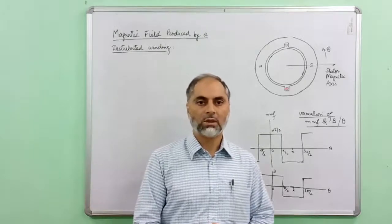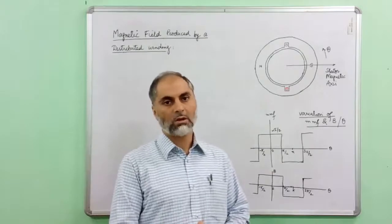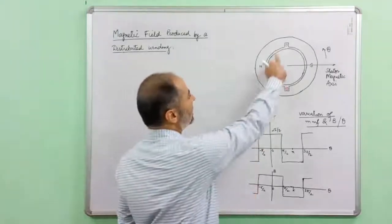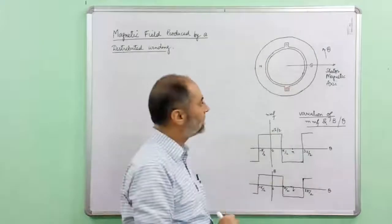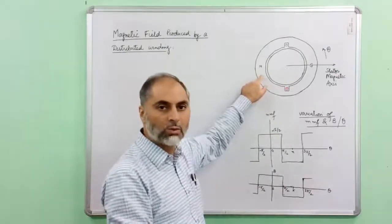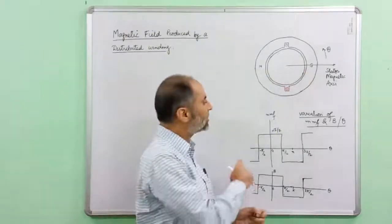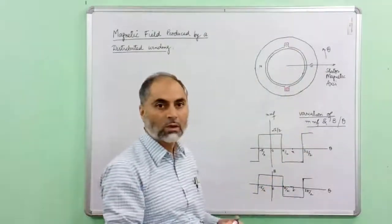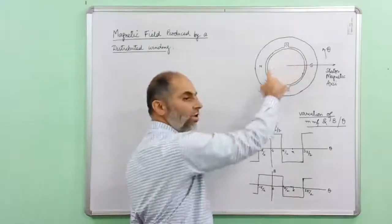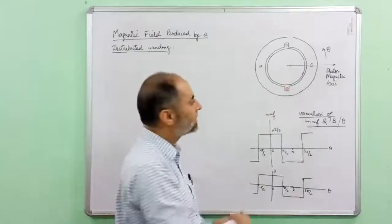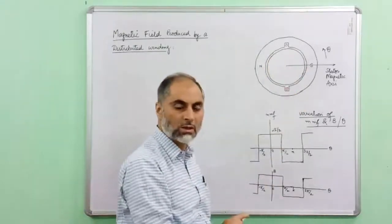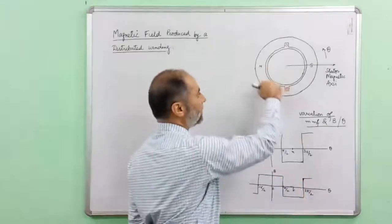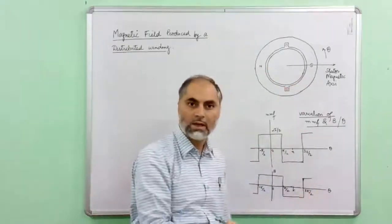We have seen that a single coil accommodated in a single slot pair on the stator results in production of two poles. The MMF in the air gap has a constant value under the north pole and under the south pole, and the variation of MMF with respect to the space angle theta can be plotted as a square wave. Since we have considered a round rotor machine the air gap is uniform, hence the reluctance is constant, and the magnetic flux density in the air gap shows a variation similar to the MMF wave.